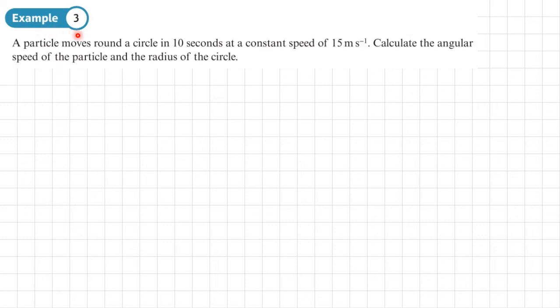Example 3: a particle moves around a circle in 10 seconds at a constant speed of 15 meters per second. Calculate the angular speed of the particle and the radius of the circle. So let's start with the first bit where we've got here that a particle moves around a circle in 10 seconds. Now, what does that mean? If it moves around a circle in 10 seconds, that means the particle has done 2 pi in 10 seconds.